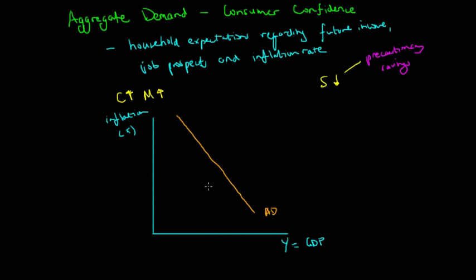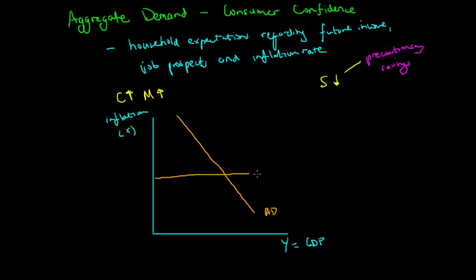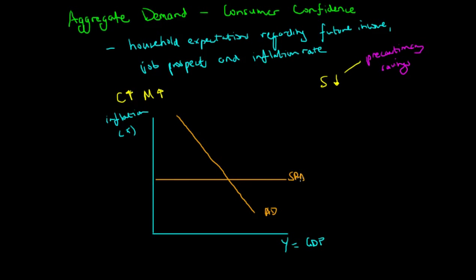The aggregate supply curve is curved because there must be an upward limit to production. For simplicity, we assume a short run aggregate supply curve, which is different from a long run aggregate supply curve. In the short run, businesses supply whatever is demanded by consumers, which means they may overwork or over-utilize the labor force.